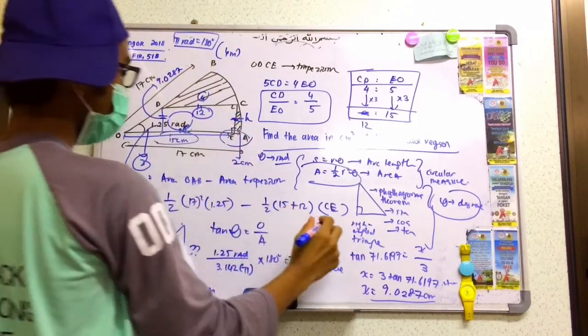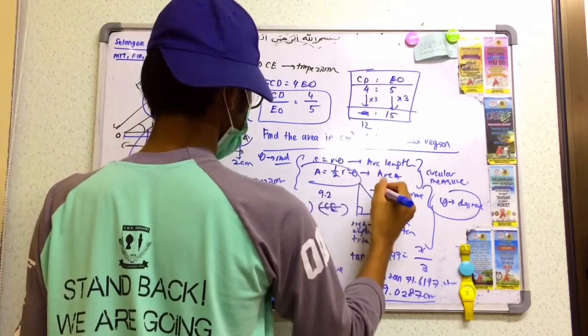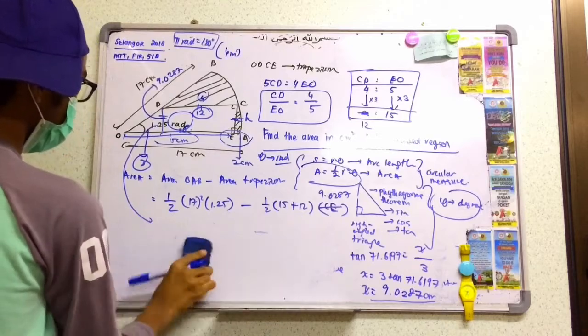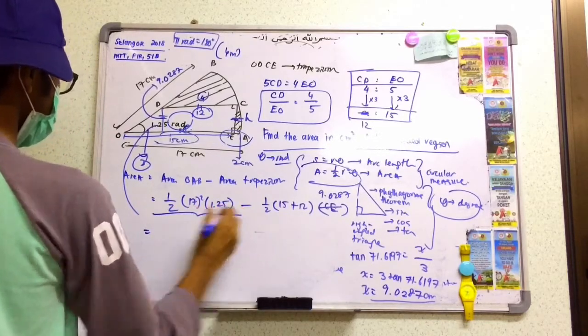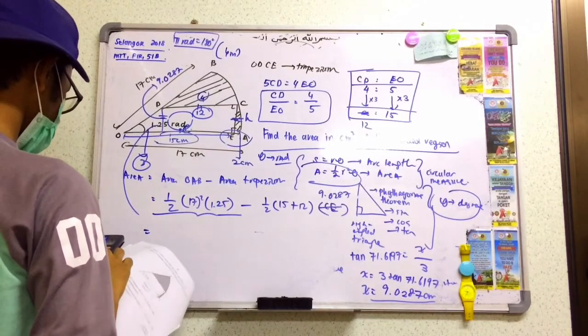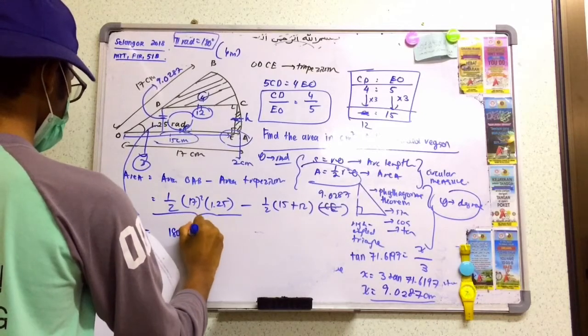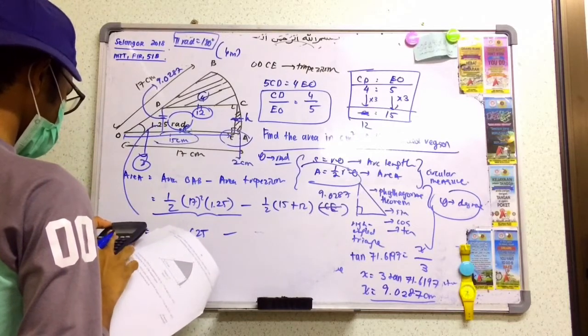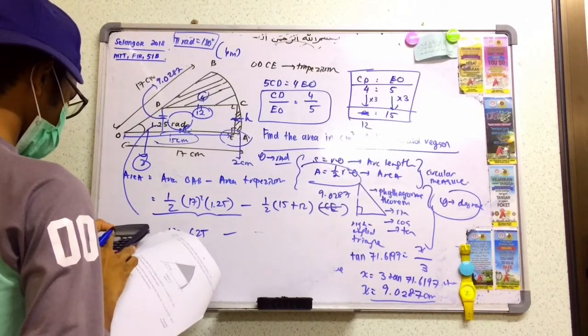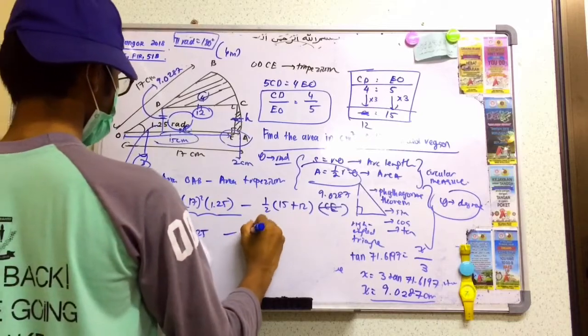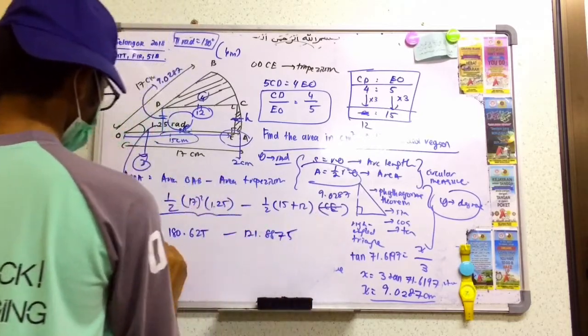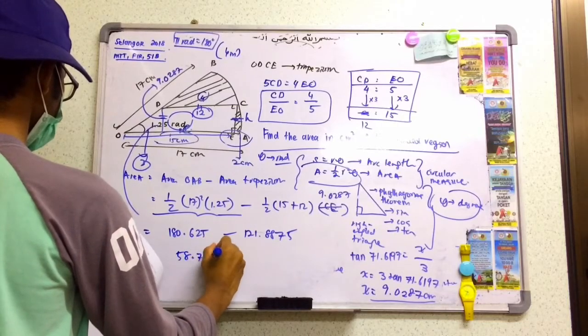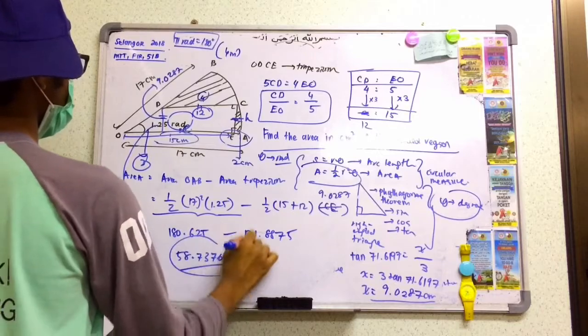Now we substitute into our formula. The sector area is half times 17² times 1.25 equals 180.625 cm². The trapezium area is half times (15 plus 12) times 9.0287 equals 121.887 cm². So the shaded area equals 180.625 minus 121.887, which gives us 58.7376 cm². This is the area of the shaded region.